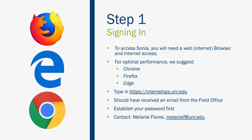The field office also uses Sonia to monitor and evaluate student internships for quality improvement. Sonia is amazing and will hopefully make everybody's life ten times easier. For step one — signing in — you will need internet access and a browser. For optimal performance, we suggest Chrome, Firefox, or Edge. You'll want to bookmark the URL on your screen: https://internships.unr.edu. You should have received an email from the field office on how to access Sonia and establish your password.